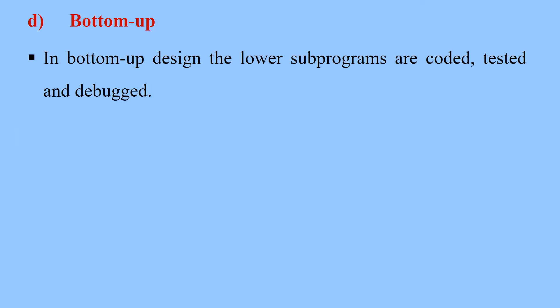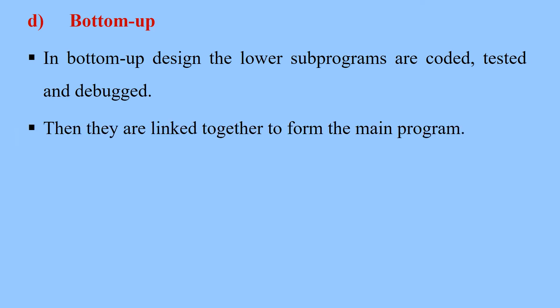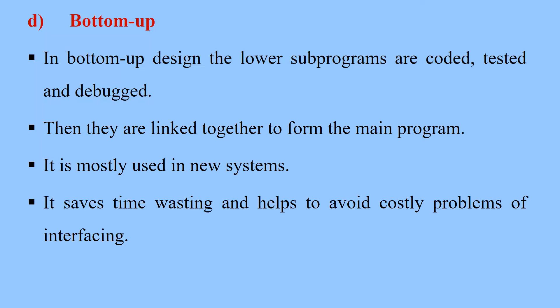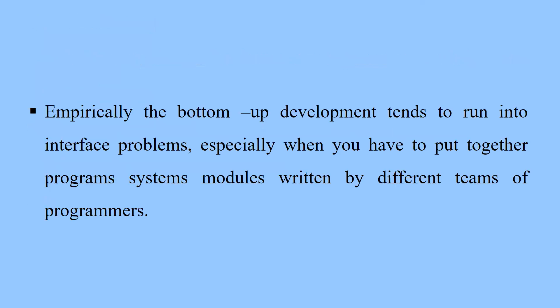Then we have what we call the bottom-up design. In bottom-up design, the lowest sub-programs are coded, tested, and declared. This is the opposite of the top-down approach. Instead of beginning from the top, you begin from the lowest parts. You begin coding the smaller, very lowest sub-programs and then continue linking or merging them together up to the main program. It is mostly used in new systems. It saves time and avoids the costly problems of interfacing. However, the bottom-up development tends to run into interface problems, especially when putting together program system modules that have been written by different teams or programmers.